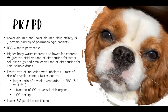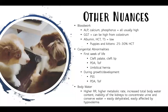They also have a lower blood-gas partition coefficient, meaning inhalants enter their blood more easily. On bloodwork, don't forget that ALP, calcium, and phosphorus are usually high due to growing bones. GGT can be high from colostrum. Importantly, hematocrit and total solids are always low — puppies and kittens have about 25–30% hematocrit. If you see a puppy or kitten with a hematocrit in the 35–40% range, that patient is likely quite dehydrated.